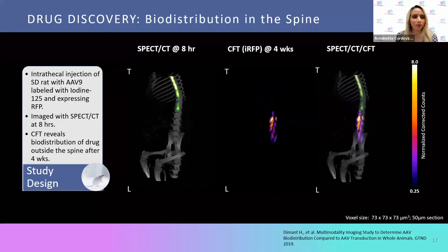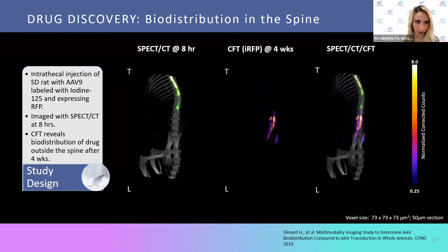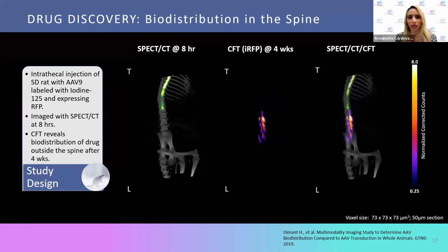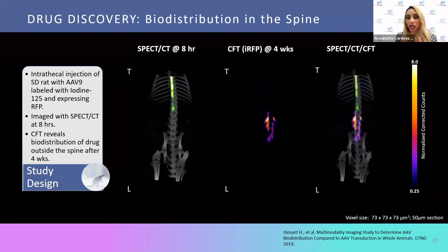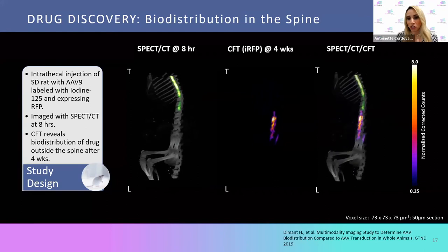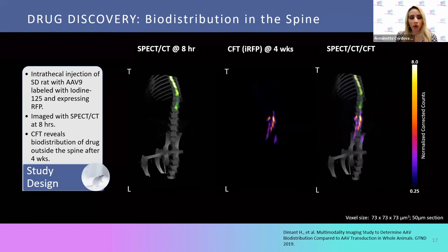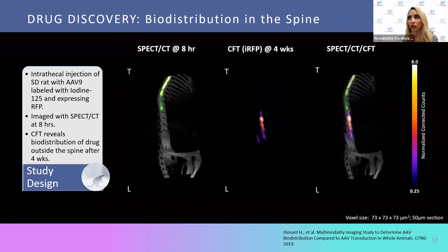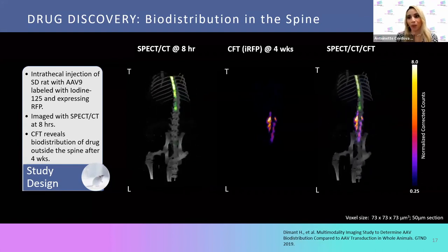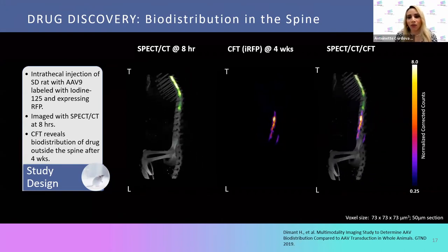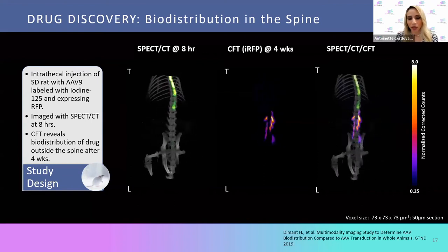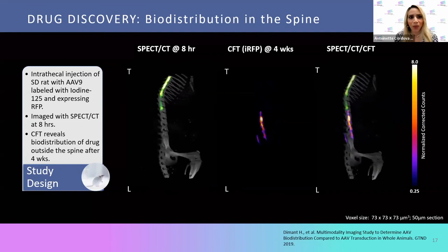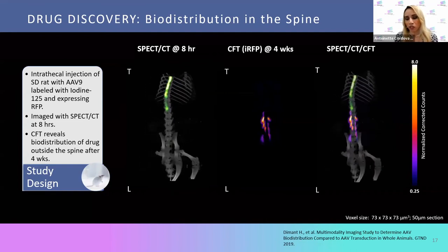Here's another study highlighting an intrathecal injection of an AAV9 labeled with iodine-125 and RFP. They were looking at biodistribution of the drug, and with CFT they were able to determine that biodistribution actually left the spine and areas of interest. Also worth noting: when using a radio label, you have to wait for decay and can't multiplex. CFT overcomes that — using a fluorophore is also non-toxic, something to consider when designing animal studies. It really overcomes limitations of nuclear imaging.